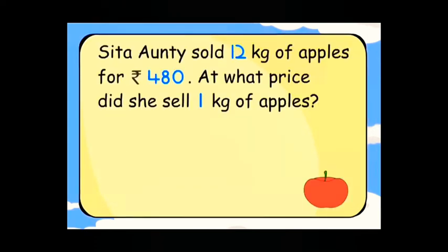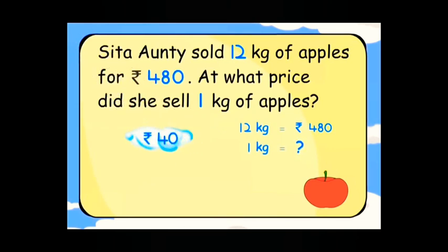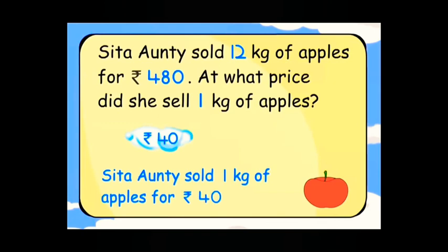Seetha Aunty sold twelve kilograms of apples for rupees four hundred and eighty. At what price did she sell one kg of apples? Twelve kg is equal to rupees four hundred and eighty. One kg is equal to rupees forty. Seetha Aunty sold one kg of apples for rupees forty.